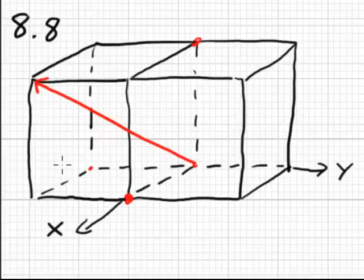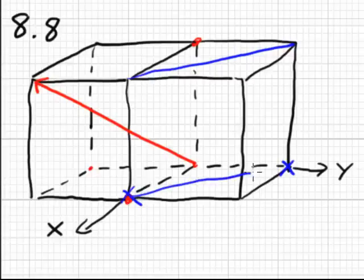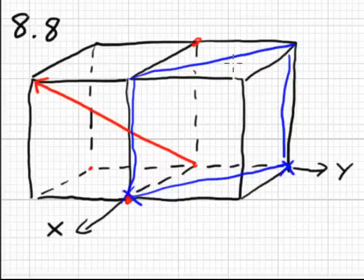Our planes that we're looking at are the one, one, zero plane. So we have x intercept at one, a y intercept at one, and a z intercept never. That means we have this plane. This is the one, one, zero plane.